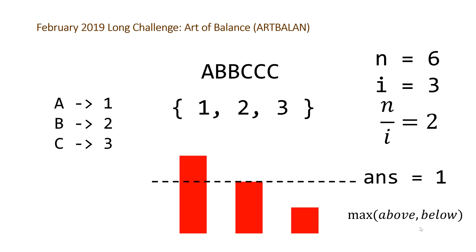We stop iterating because we've hit the limit of elements in our frequency vector. Our final answer is 1. There were two valid ways: change the A to a B to get two characters in the final string, or change a C to an A to get three different characters. Both work. Once you have the insight that you can brute-force check every single target number of characters, the problem is not that difficult.